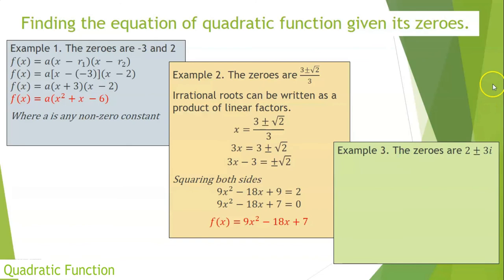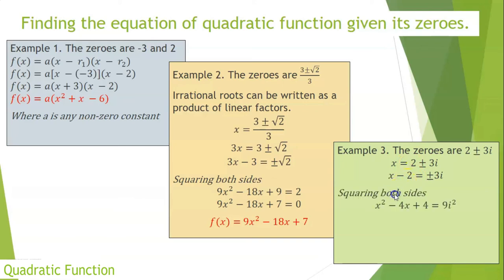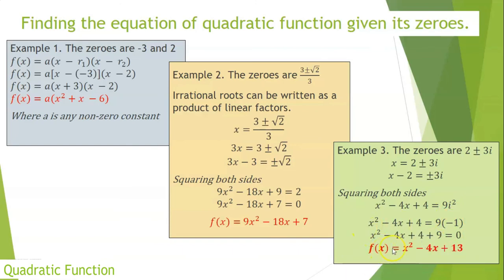What if the roots are imaginary? Given x = 2 ± 3i, transfer 2 to the other end: x − 2 = ±3i. Squaring both sides using (x − 2)² = (3i)²: x² − 4x + 4 = 9i². Since i² = −1, this becomes x² − 4x + 4 = −9. Combining like terms: f(x) = x² − 4x + 13.